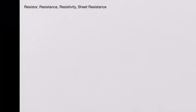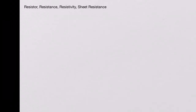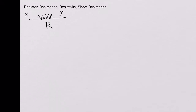In this video we will learn about a resistor, resistance, resistivity, and sheet resistance. A resistor is an electronic component that resists the flow of electric current. Schematically it's represented with two terminals, say X and Y, and the resistance of this resistor is R.